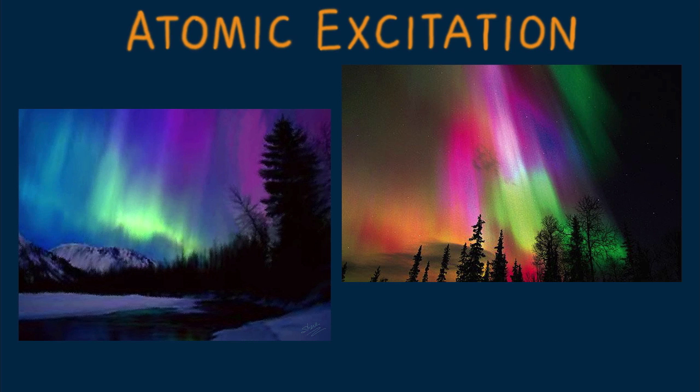Oxygen atoms produce a greenish-white color, nitrogen molecules produce red-violet, and nitrogen ions produce a blue-violet color. Auroral emissions are not restricted to visible light. They also include infrared, ultraviolet, and X-ray radiation.